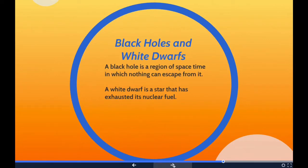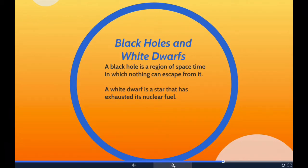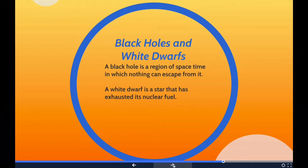A black hole is a region of space-time exhibiting such a strong gravitational effect that nothing — not even particles and electromagnetic radiation, such as light — can escape from inside it. The theory of general relativity predicts that a sufficiently compact mass can deform space-time to form a black hole. White dwarfs are what stars like the sun become after they have exhausted all of their nuclear fuel. Near the end of its nuclear burning stage, this type of star expels most of its outer material, creating a planetary nebula, and only the hot core of the star remains.